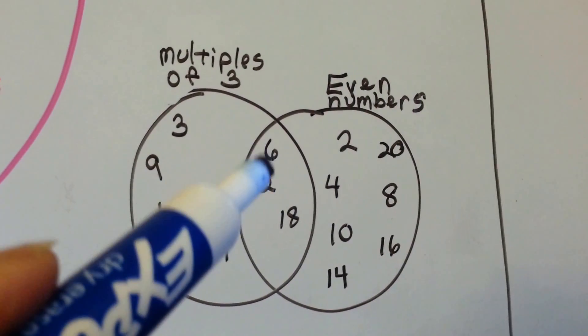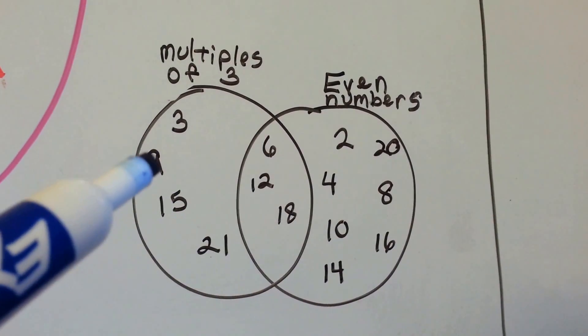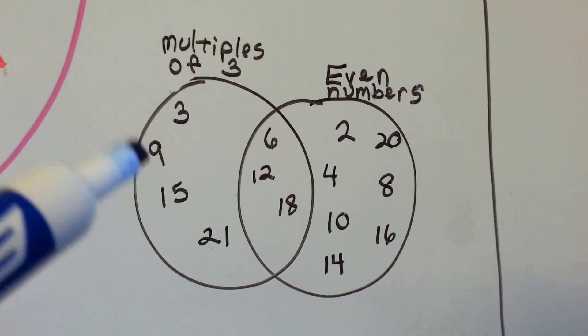6 is an even number and a multiple of 3. 9 is a multiple of 3, but it's not an even number, so it's over here.